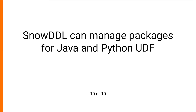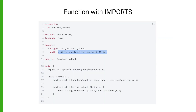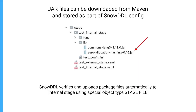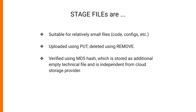Finally, Snow DDL can help you manage packages for Java and Python user-defined functions. Packages are normally stored in internal stages and are imported directly in the definition of functions. You may store package files directly as part of the Snow DDL config, and Snow DDL will upload such files to internal stages for you. It is suitable for relatively small files, which are uploaded using the standard PUT command and deleted using the standard REMOVE command.